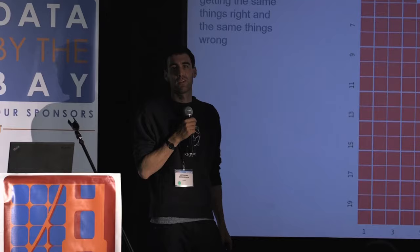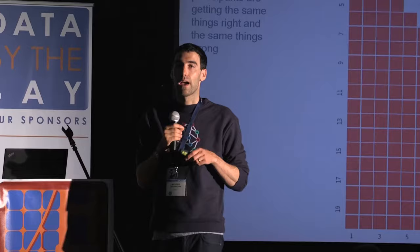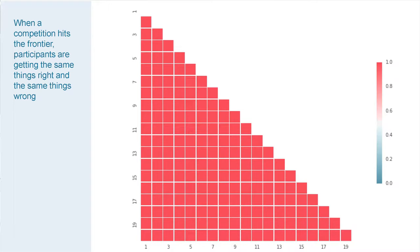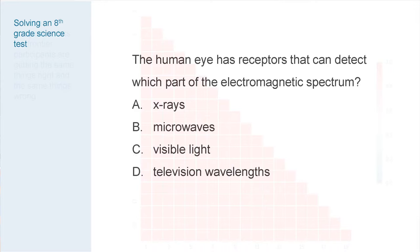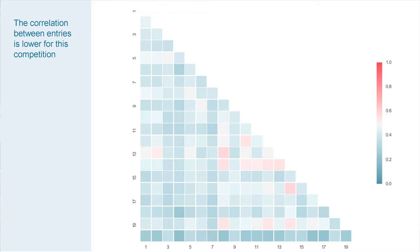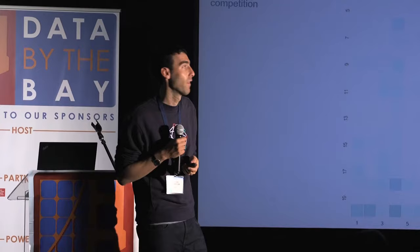Now I'm going to show you a competition where we didn't converge. This is a competition for the Allen Institute for Artificial Intelligence — they wanted to build an algorithm that could solve an eighth-grade science quiz. An example question: 'The human eye has receptors that can detect which part of the electromagnetic spectrum?' The answer is visible light, and all the algorithms got this right. But looking at the correlation map, people are getting dramatically different things right and wrong for this competition — a sign that it did not converge.